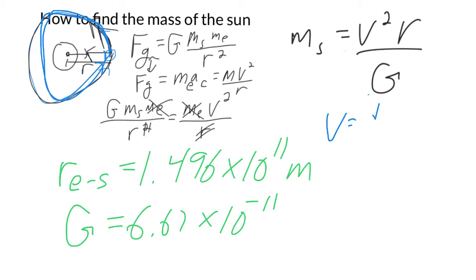So we can say velocity, if you think back to just simple distance over time, one full circle is going to be the circumference. So we can say 2 pi times R, that's the circumference, where R is the distance, the radius of the circle that the Earth is taking.